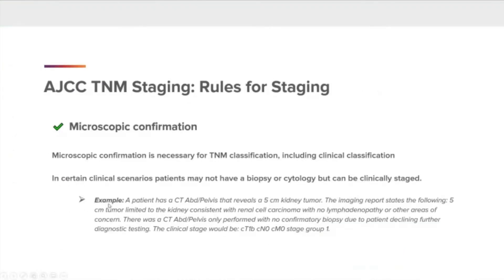So let's first review the first general rule: microscopic confirmation. Microscopic confirmation is necessary for TNM classification, including clinical classification. In certain clinical scenarios, patients may not have a biopsy or cytology but still can be clinically staged. An example would be a patient with a CT abdomen pelvis that reveals a 5-centimeter kidney tumor. The imaging report states: 5-centimeter tumor limited to the kidney, consistent with renal cell carcinoma, with no lymphopathy or other areas of concern, and no biopsy was performed due to the patient declining further diagnostic testing. The clinical stage would be clinical cT1B, cN0, cM0, stage group 1.